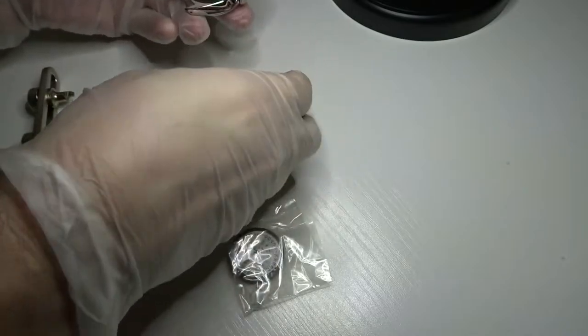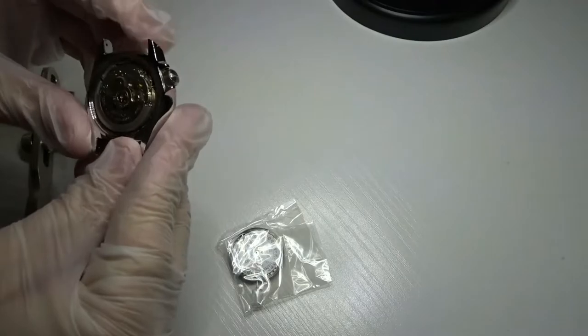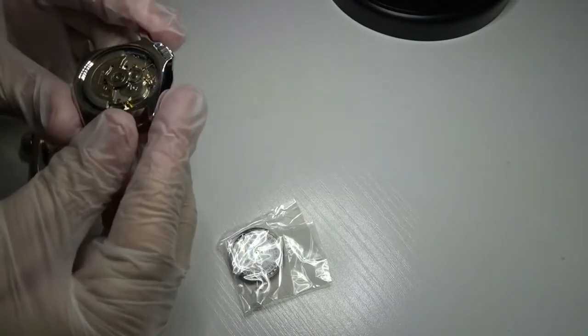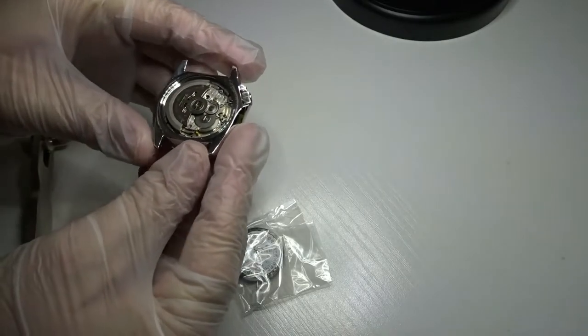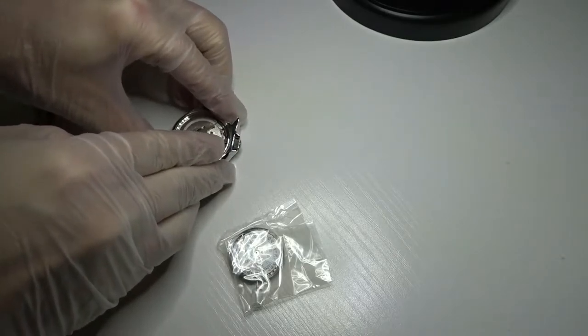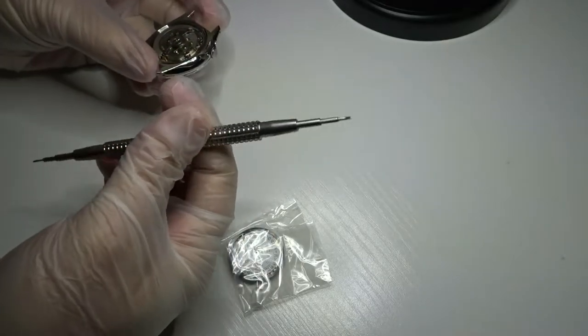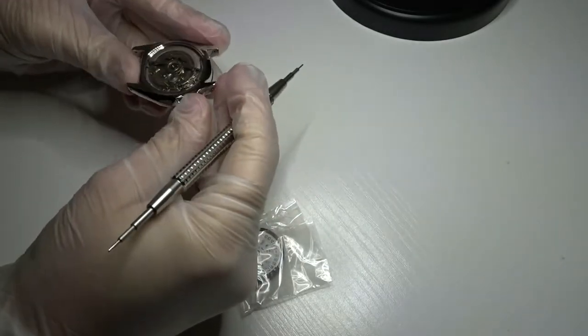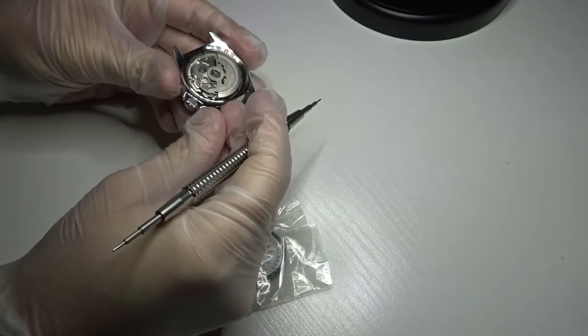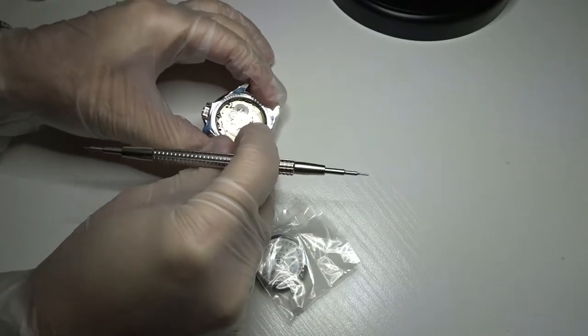So I had gotten an NH36 but the stem broke off. Long story short, I had to use a 7S36 movement that I had on hand and it turned out good. It's a fine movement, it just doesn't hack or hand wind. So I'm just going back here and swapping out that 7S36 movement with another NH36 movement so I can get back the hacking and hand winding features.